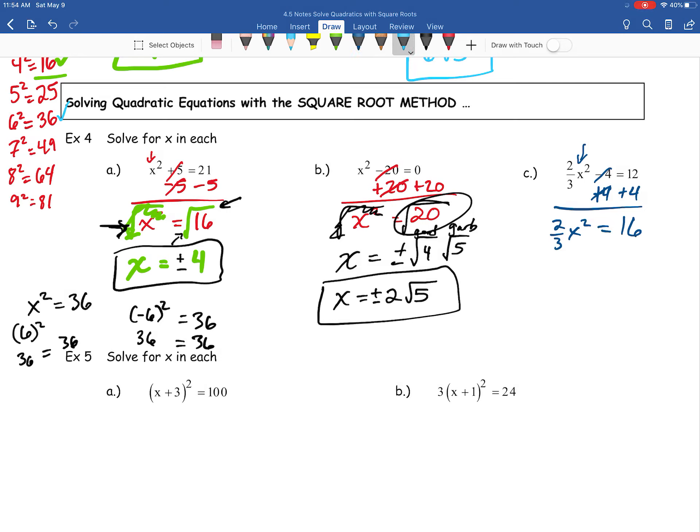Here they cancel, leaving us with that 2/3 X squared equals, on the right side, we end up with 16.